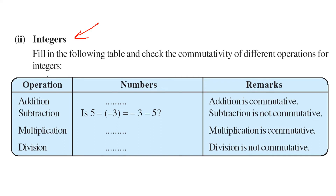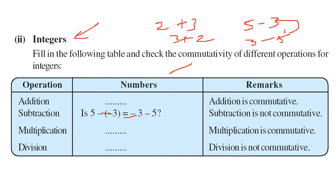For integers, when you add — if you add 2 with 3 or 3 with 2 — you'll get the same integer. Subtraction is not commutative for integers: 5 minus 3 is not equal to 3 minus 5, these two are different numbers. Multiplication is also commutative — if you multiply 2 with 3 and 3 with 2, you get the same result. Division is also not commutative.